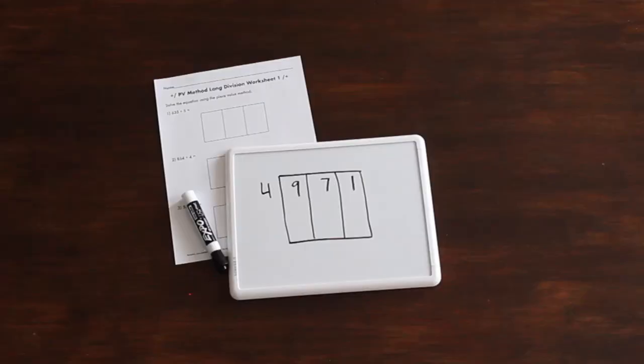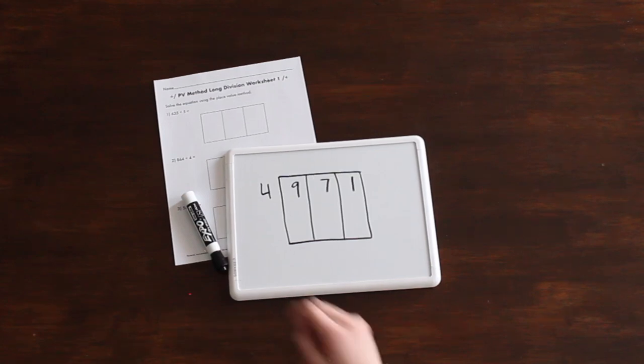To set up for the place value method, write the divisor in front like usual. Then write the dividend number one, with each number spaced out a little and lines between. In this example, we'll divide 971 by 4. For many students, starting with a multiple list of the divisor is really helpful. My daughter did this example and she knows her multiples really well, so she didn't do that. You will start in the largest place value and find the number that is closest without going over, which is 8. So divide 8 by 4 is 2. We're at the 2 at the top and the 8 at the bottom.